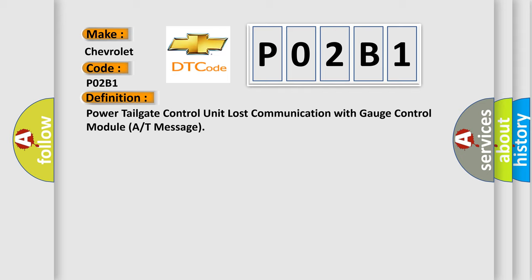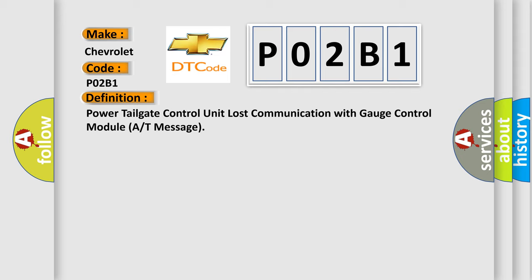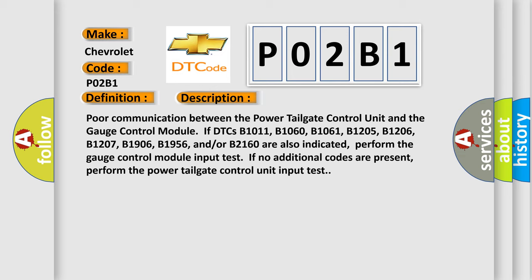Here is a short description of this DTC code: poor communication between the power tailgate control unit and the gauge control module. If DTCs B1011, B1060, B1061, B1205, B1206, B1207, B1906, B1956, and/or B2160 are also indicated, perform the gauge control module input test. If no additional codes are present, perform the power tailgate control unit input test.